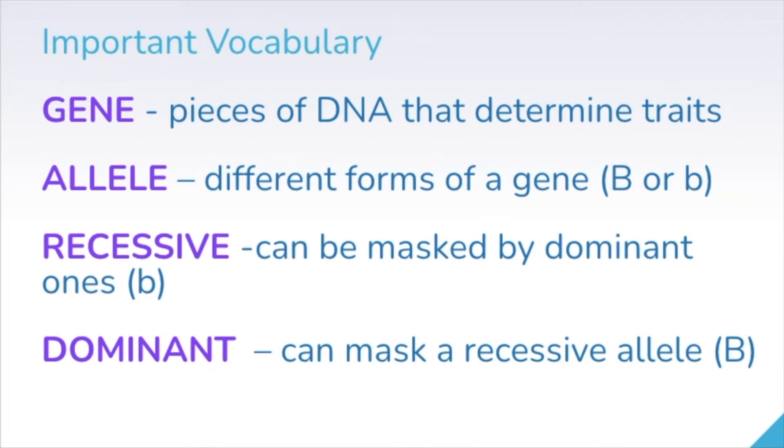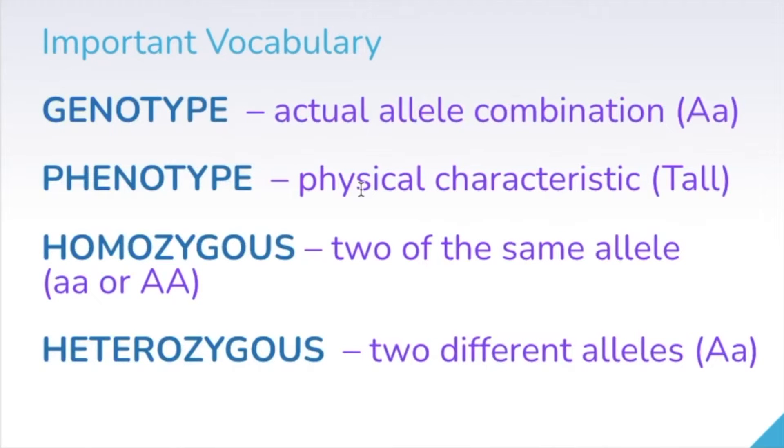A gene or genes are pieces of DNA that determine your traits. An allele is just a different form of a gene. If we're writing out genetics problems, this might be written as a big B or a little b, for example. A recessive gene can be masked by a dominant one, and a dominant allele can mask a recessive one. Often dominant alleles are represented by capital letters. A genotype is the actual combination of alleles that somebody has. A phenotype are the physical characteristics that come from that genotype. So for example, your physical characteristic could be tall. That's your phenotype.